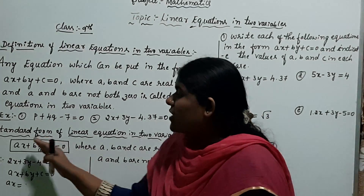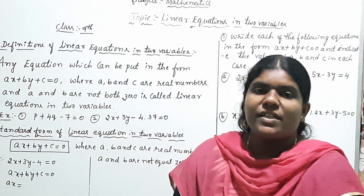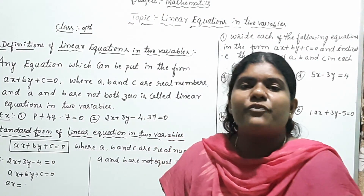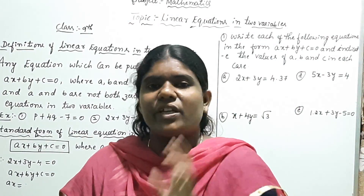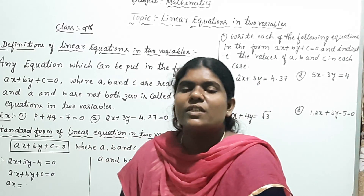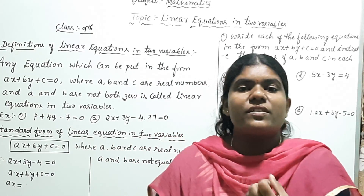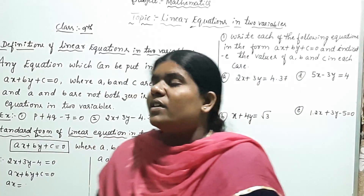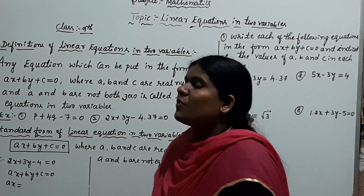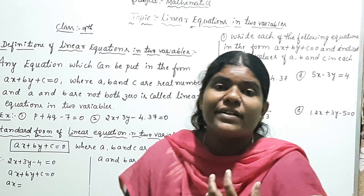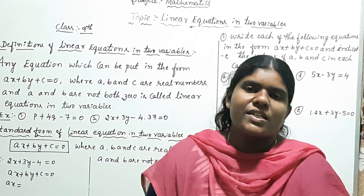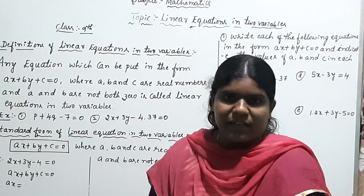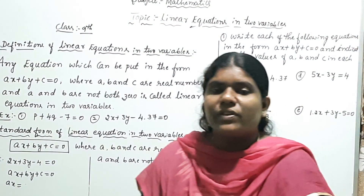Next, what is the standard form of linear equations in two variables? You are already familiar with the standard form for one variable: AX plus B is equal to zero, where A and B are real numbers. For two variables, the standard form is AX plus BY plus C is equal to zero, where A, B, and C are real numbers and B does not equal zero.